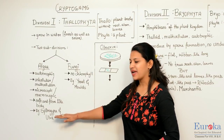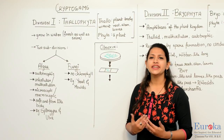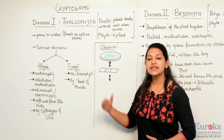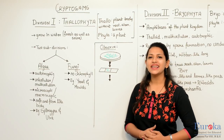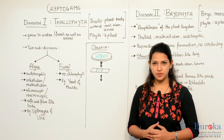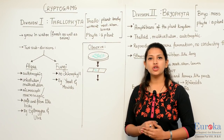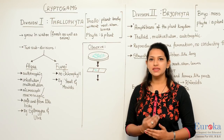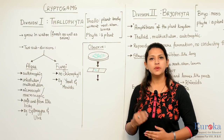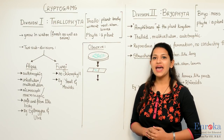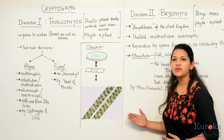Examples of algae are Spirogyra and Ulva. Fungi do not contain chlorophyll, thus they are heterotrophs. Examples of fungi are yeast and mold. To observe algae under a microscope, we take the green slush from a pond, place it on the glass plate, put some drops of water and wash it. Some strands are extracted and spread on a glass slide, drops of water added and covered with a cover slip, then observed under the microscope.